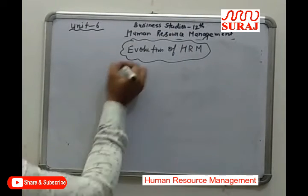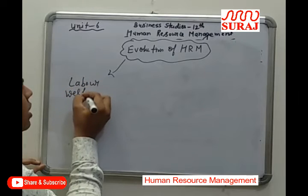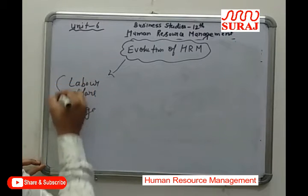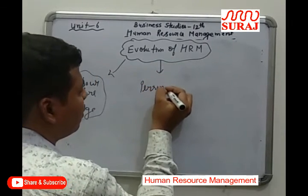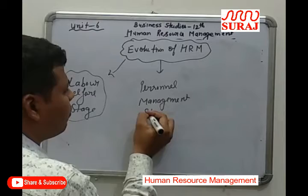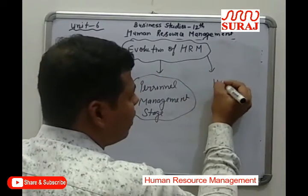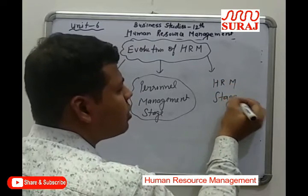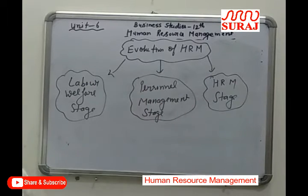The evolution of HRM can be divided into three parts: the first is the labor welfare stage, the second is the personal management stage, and the third is the HRM stage. We will explain each of these three stages of the evolution of HRM one by one.